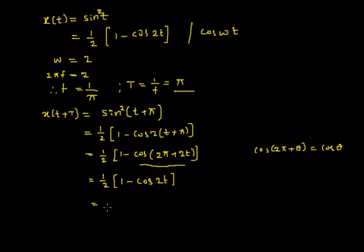And 1/2(1 - cos 2t) is nothing but the original signal sin²t. So I can go back.